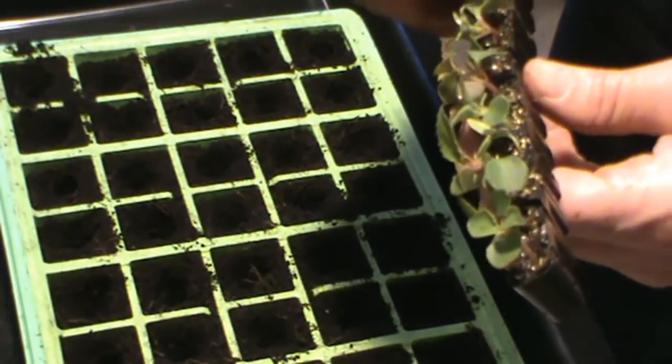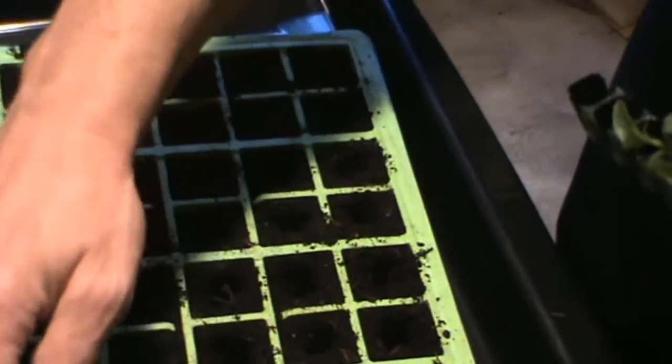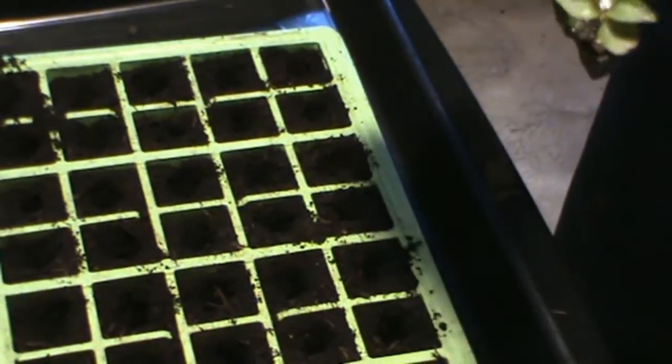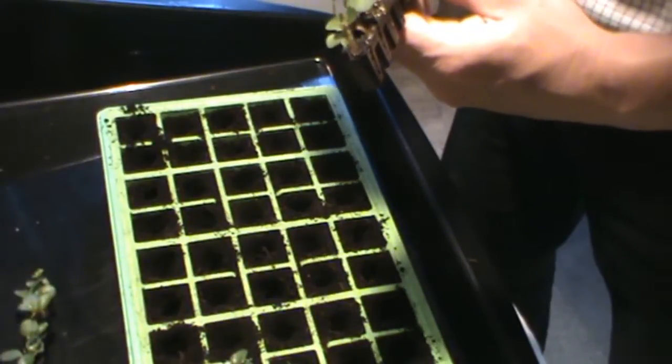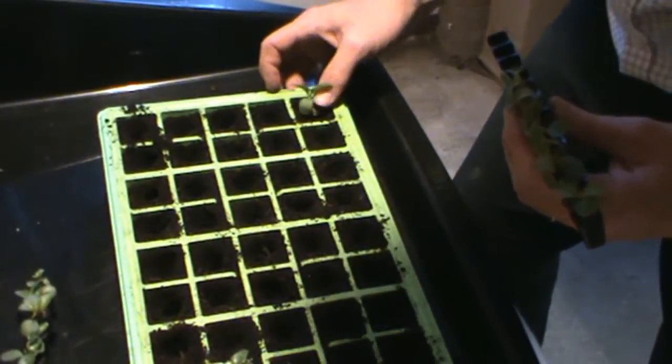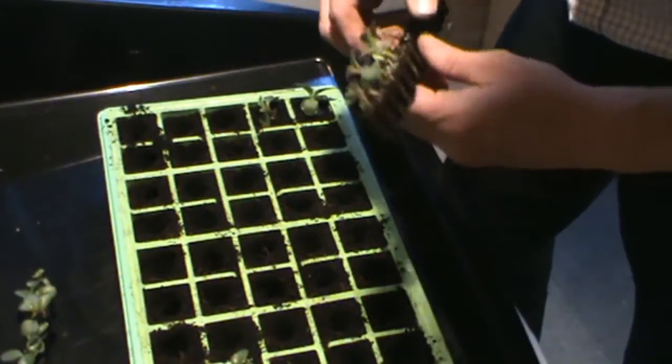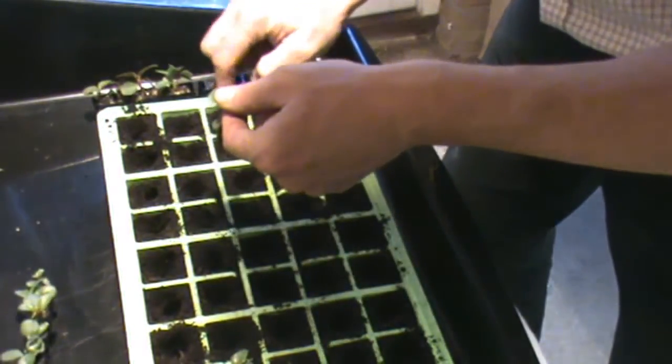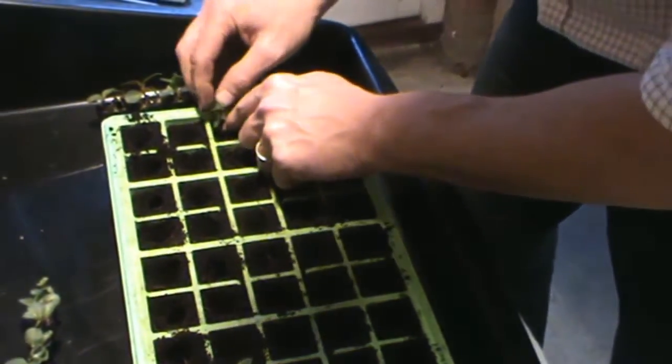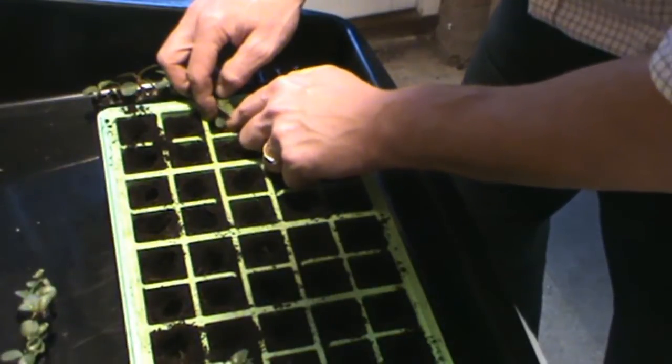Demonstrating the planting process, inserting plugs into the pre-made holes. That one's dead. That hole's too big - you don't need a big hole, they're only tiny little plugs. This is a 40's tray, a 40 module tray.